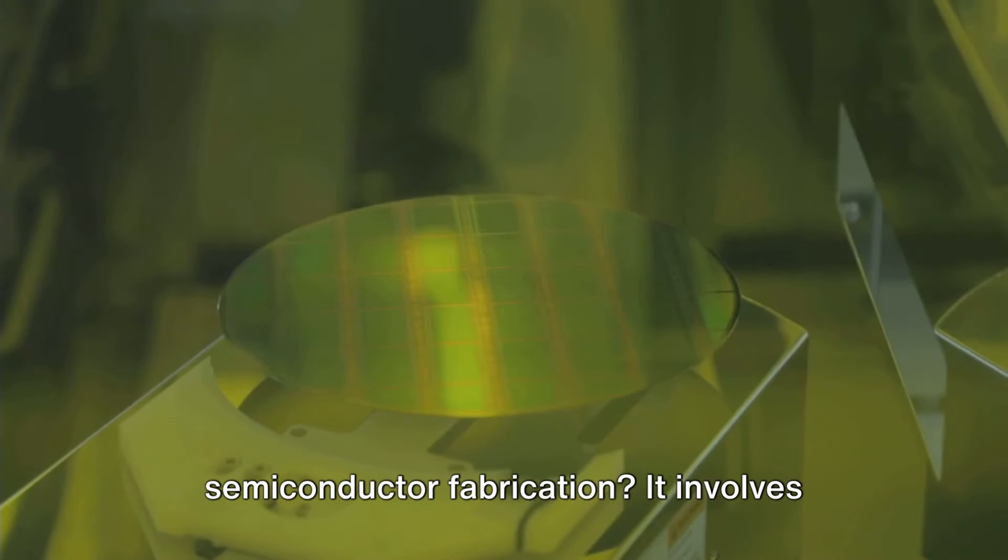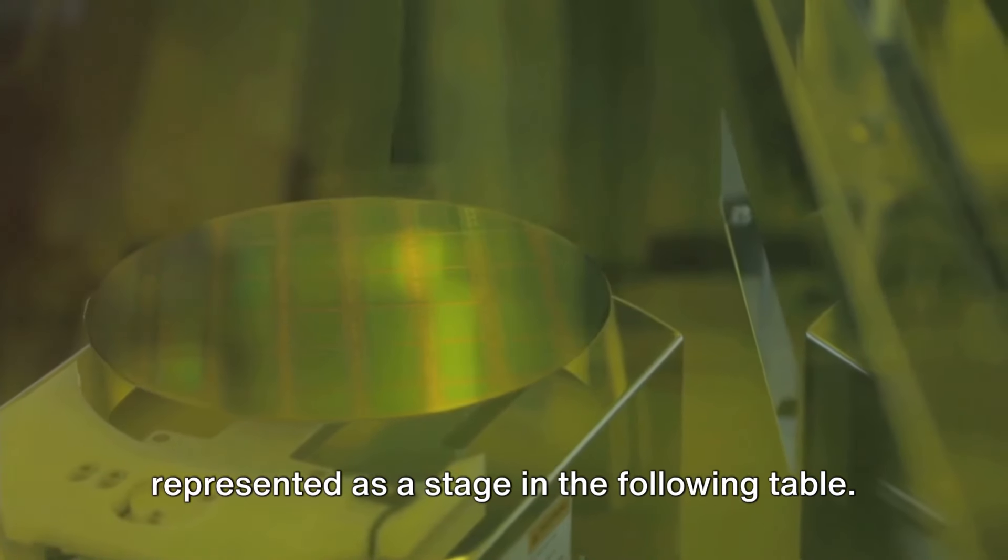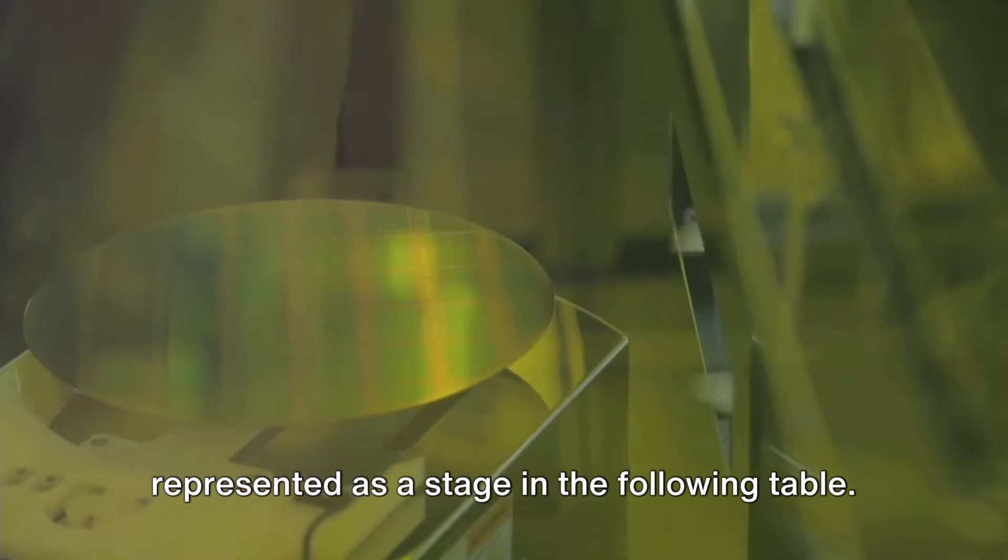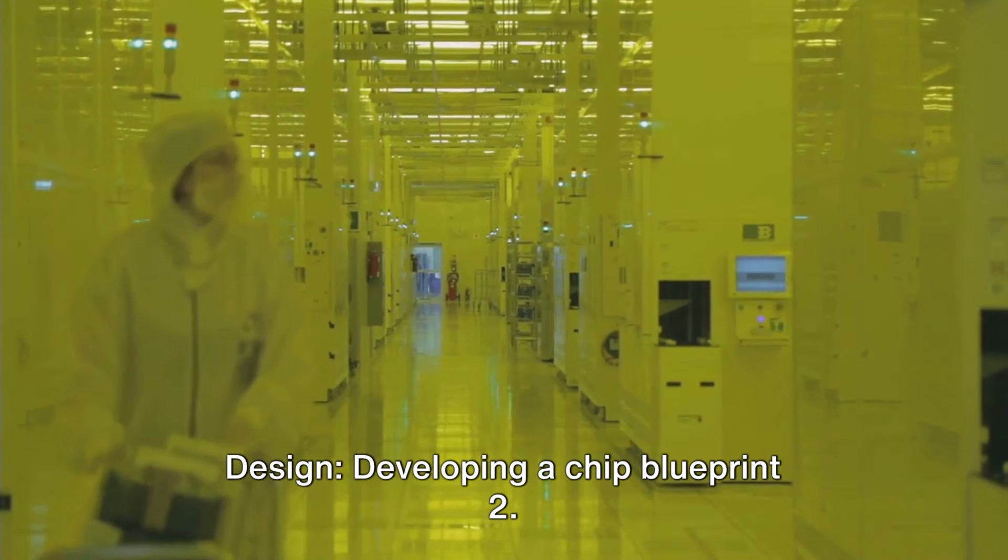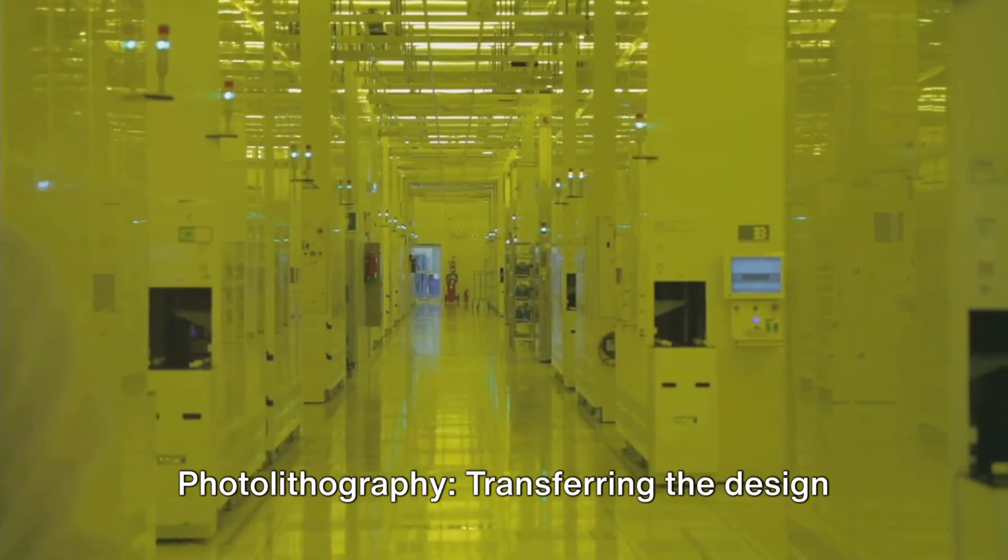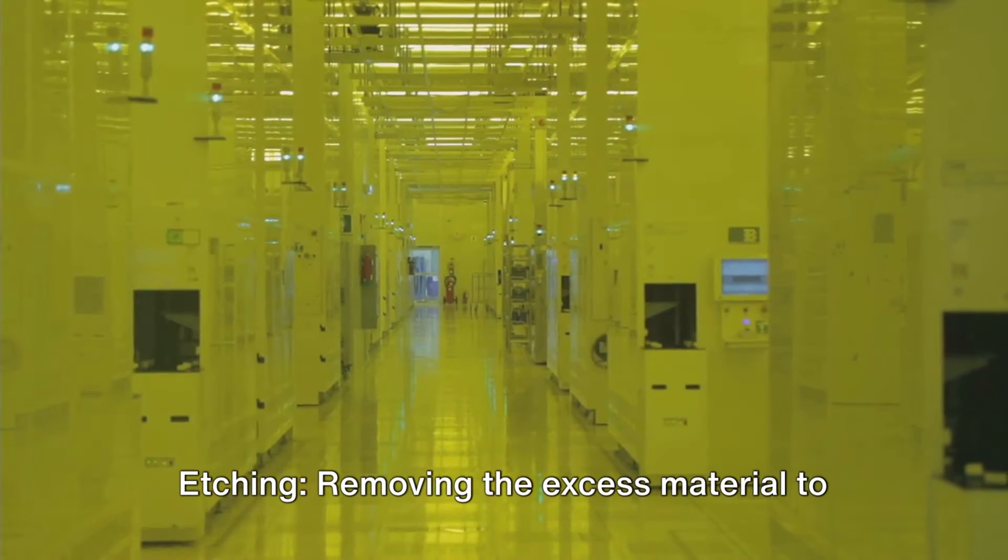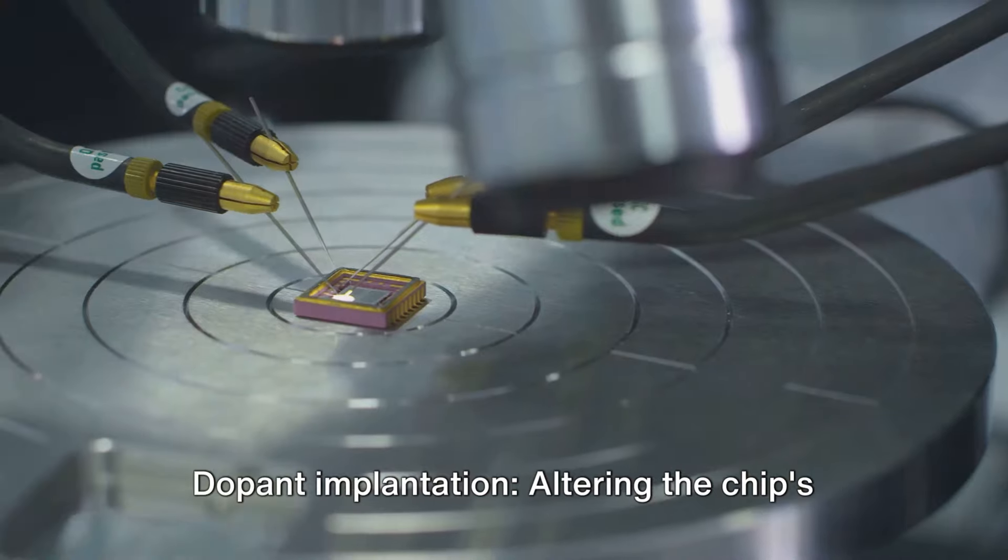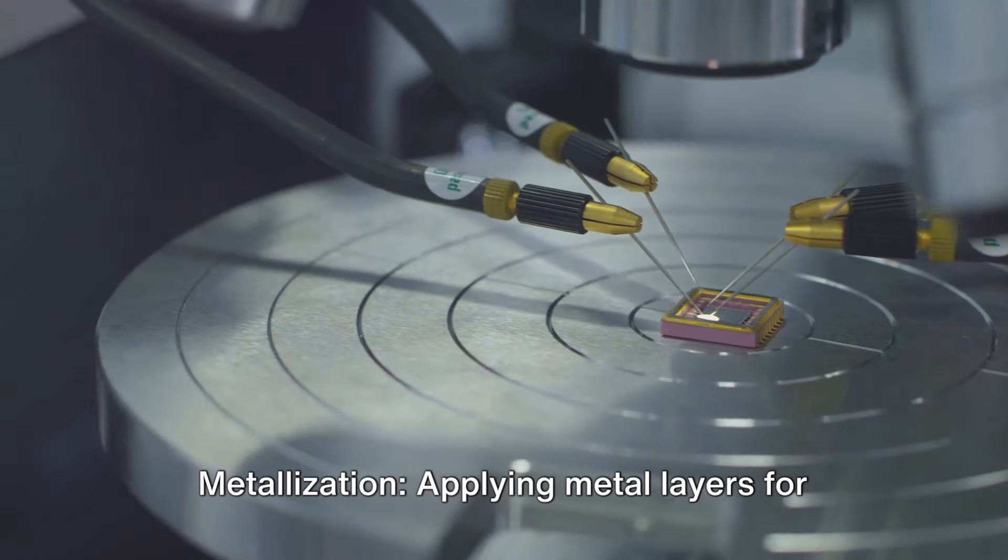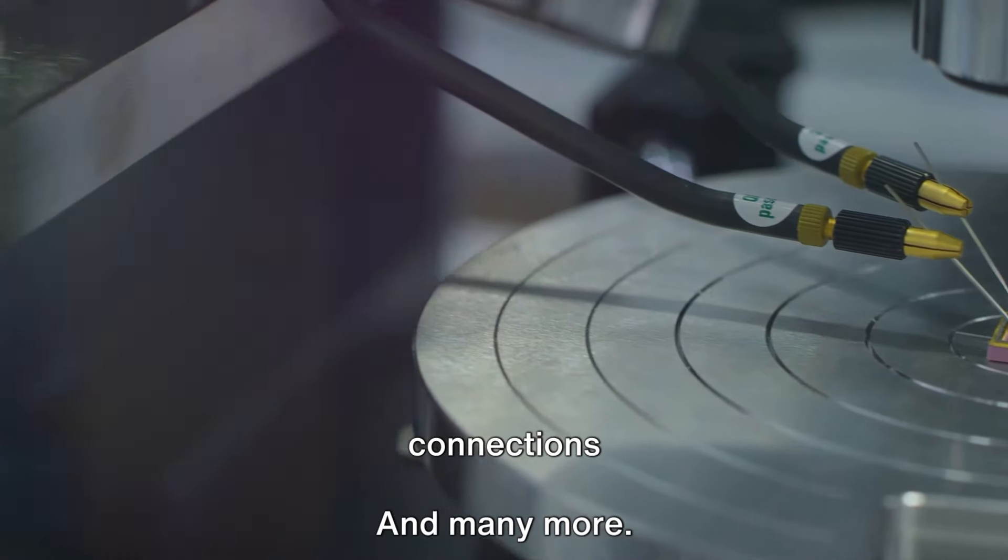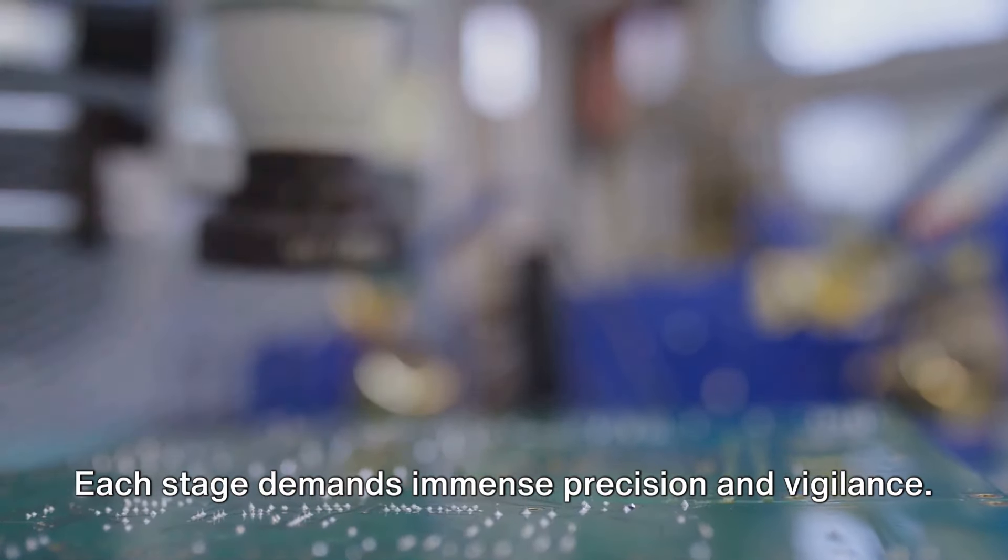But what goes on behind the scenes in semiconductor fabrication? It involves numerous meticulous steps, each represented as a stage in the following table. Table depicting stages of semiconductor fabrication: 1. Design developing a chip blueprint. 2. Photolithography, transferring the design onto a silicon wafer. 3. Etching, removing the excess material to reveal the chip's pattern. 4. Doping and implantation, altering the chip's semiconductor properties. 5. Metallization, applying metal layers for connections and many more. Each stage demands immense precision and vigilance.